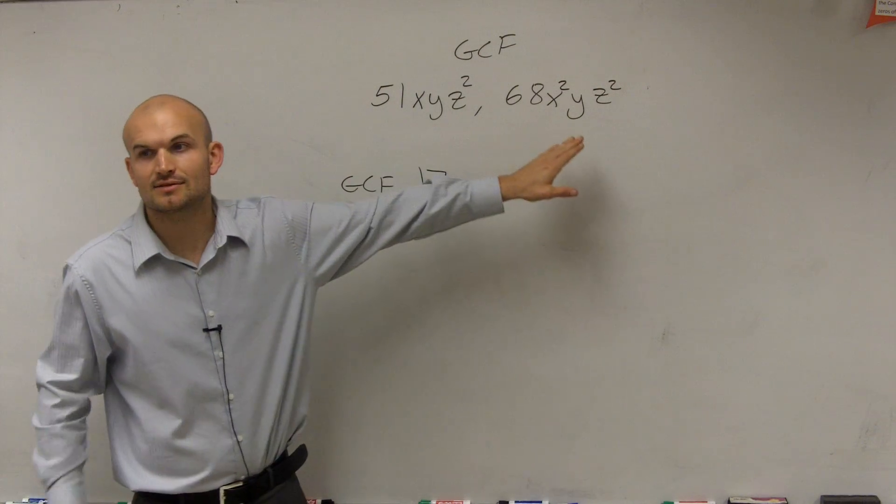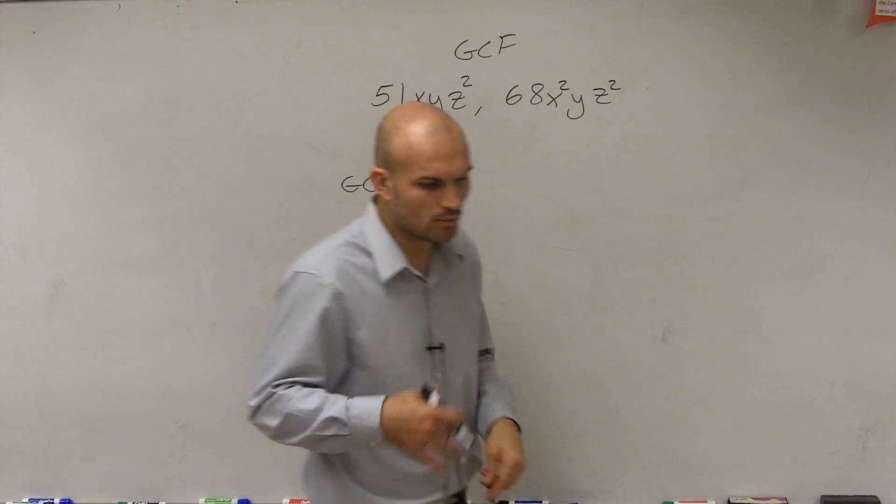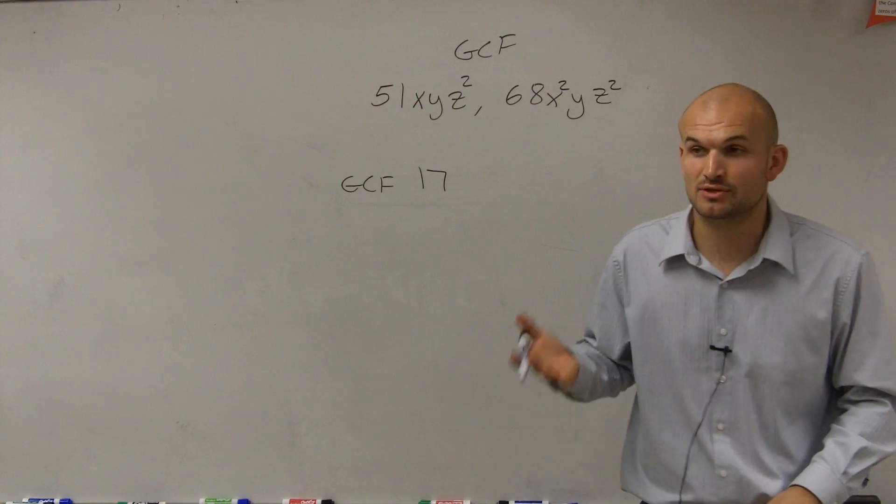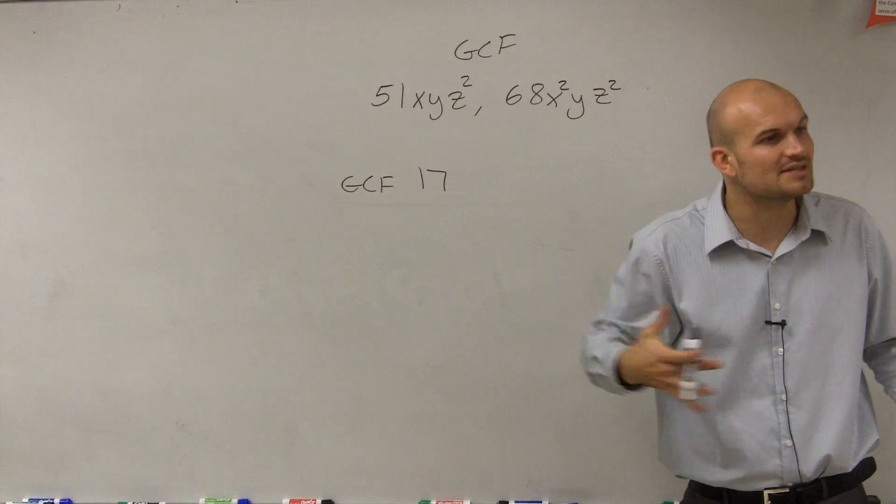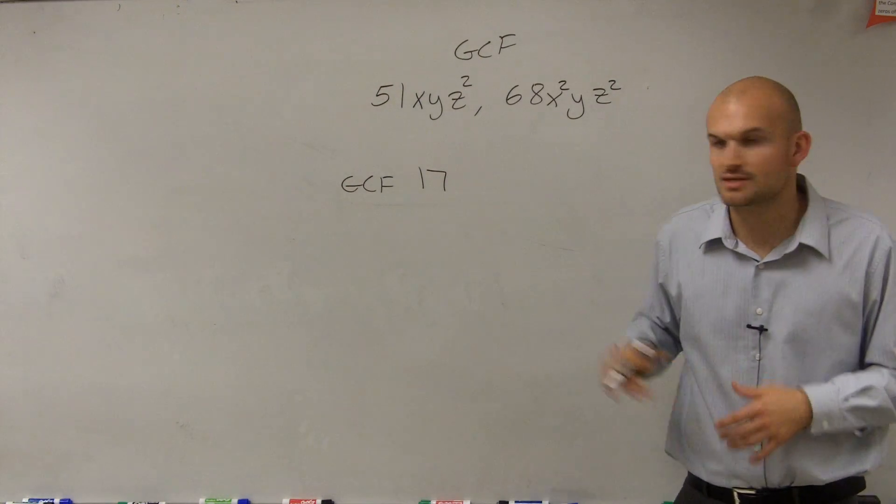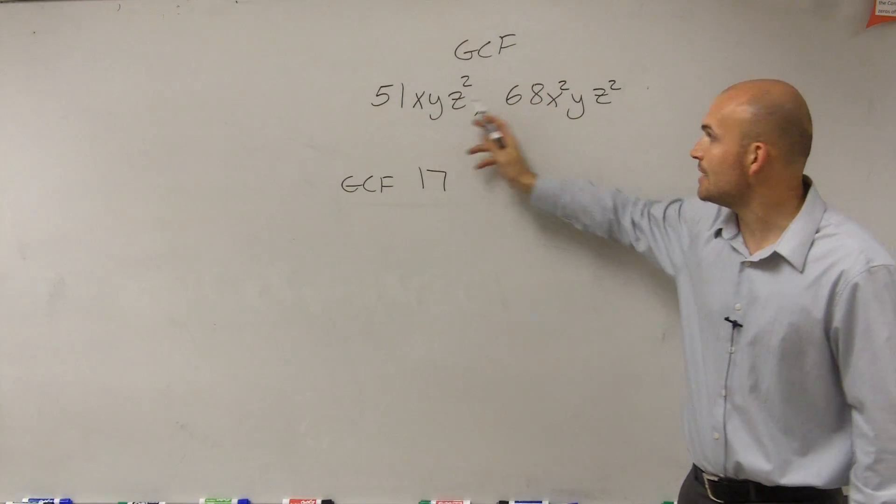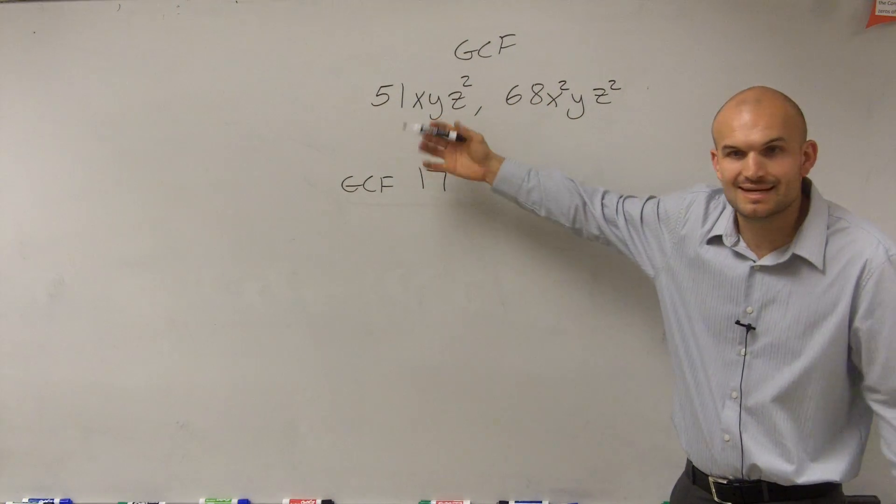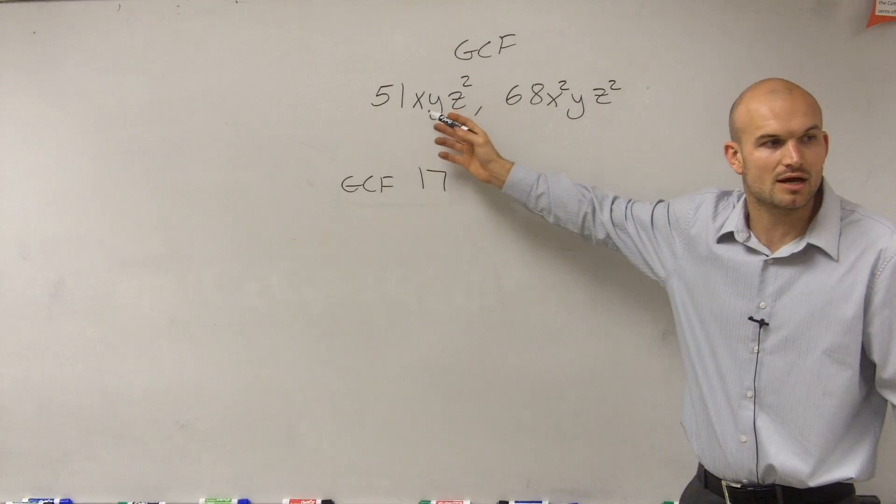Now let's go and look at the variables. Because remember, we need to see what variables divide into both of them, or what is the variable at the largest degree that divides into both of them? So the best way to kind of do this without kind of a full understanding of division of exponents, look at the degrees of your exponent. And really, your smaller degree is going to be the largest. You can't divide into a degree larger than the smallest one.